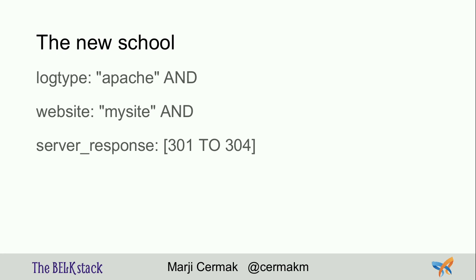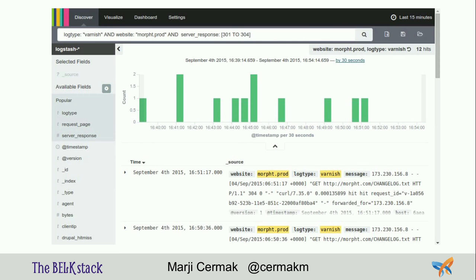What if there was a new way? What if you just go to a console and type: give me log type Apache, belonging to this site, where the server response was between 301 and 304? Well, there is such a thing — it's called Kibana. You can see the query line here, and after hitting enter you get 12 hits back over the last 15 minutes, which are exactly what you're looking for.